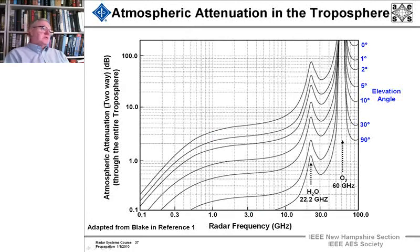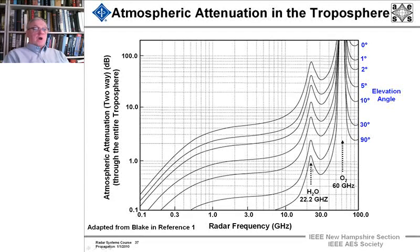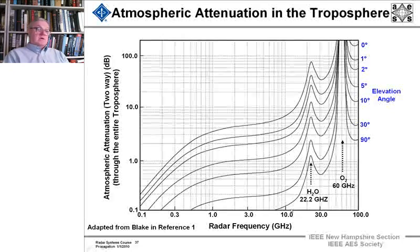When you put those together and you look at the attenuation two-way through the entire atmosphere, notice we have here a logarithmic scale, and this is two-way attenuation in dB through the whole atmosphere as a function of radar frequency on the x-axis, and that's a logarithmic scale, and we have at different elevation angles of the radar. Here's the water vapor, the water resonance, and here at 60 gigahertz is that huge attenuation due to oxygen. But you can see, it turns out there's a dip at 95 gigahertz and at 35 gigahertz, where radars are built, and then things go to hell in a handbasket after X-band, which is around this region right here, although they're significant at X-band.